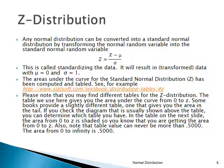The nice thing about the standard normal distribution is that we have only one, as opposed to millions with different mu-sigma pairs. For this Z distribution, all the calculations have already been done and put into tables. There are different kinds of tables — the one we're going to use most is on the next slide. A similar table is available at an online link open to the world, with tables for all kinds of statistical distributions.